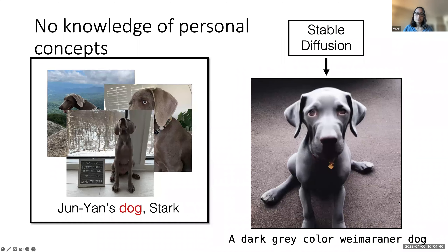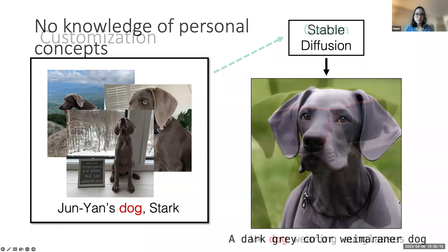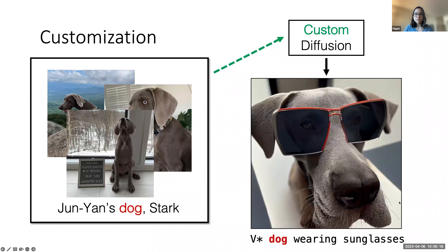How can we improve this model and embed the knowledge of this real concept moon gate into the model, so that it can generate new images with the moon gate, and even combine it with some existing knowledge of concepts like highway to generate moon gate in the middle of a highway or other unseen contexts? Also, a lot of these new concepts are personal in nature. As a user, we want to be able to generate images from our own personal lives, like friends, pets, personal objects, and places. And these images are not really seen during training, so how can we embed the knowledge of this personal concept into the model? Just describing via text does not really result in the desired output that we want.